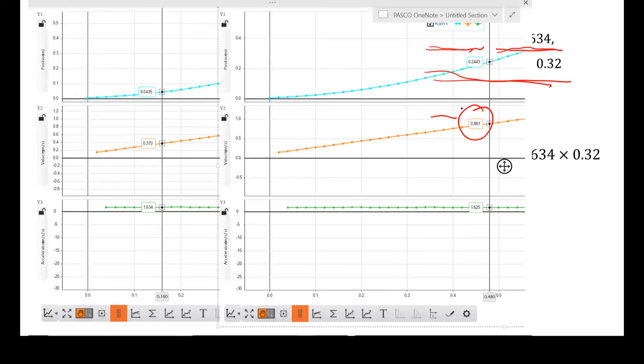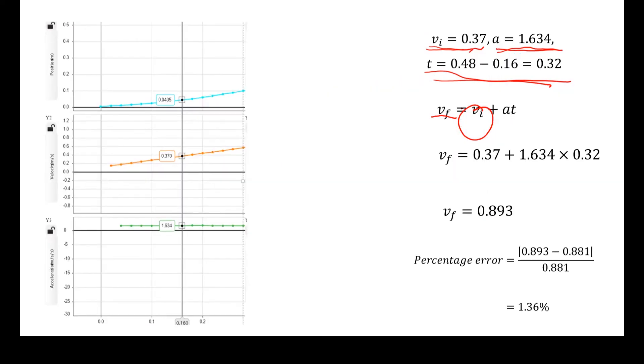And the VF measured by the smart card is, over here, 0.881. And now I'm going to compare those two values by doing a percentage error analysis. So what I do is, I take my calculated value and minus the measured value by the smart card, divided by the measured value by the smart card. And I get a percentage error of 1.36%, which basically shows the equation is correct, right? Because we're using real data, and the percentage error is almost just 1%. So that's pretty good. And this would be an example of how you use the data from the smart card to verify kinematics equations.